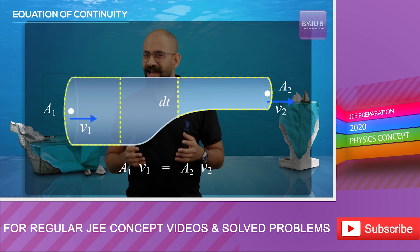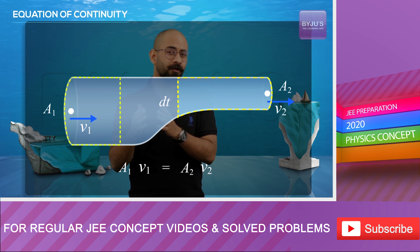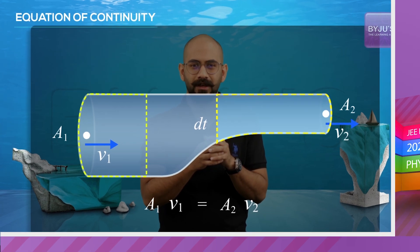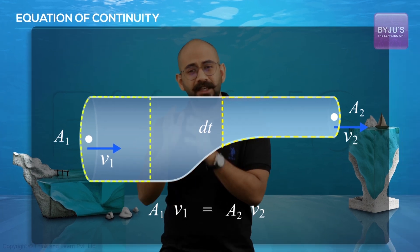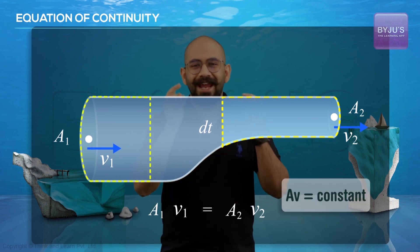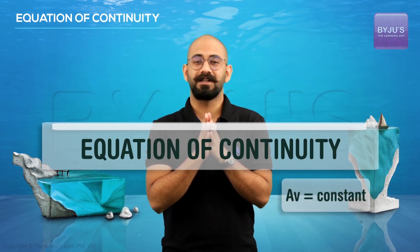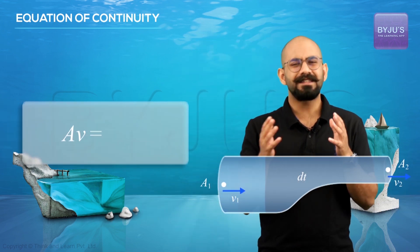Now because I took two random points, this proves that if an incompressible fluid is undergoing steady flow, then the product of the area of cross section and the speed will be the same for any two random points. And this is called the equation of continuity.